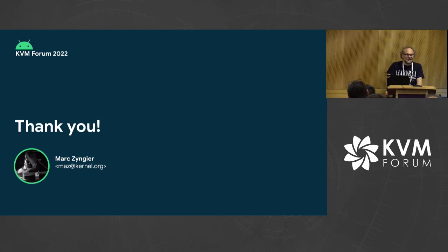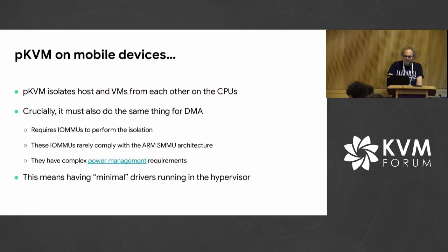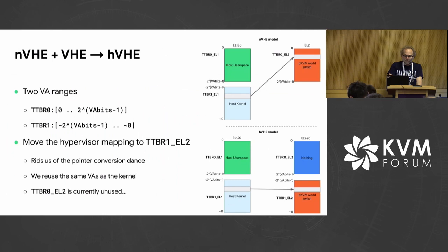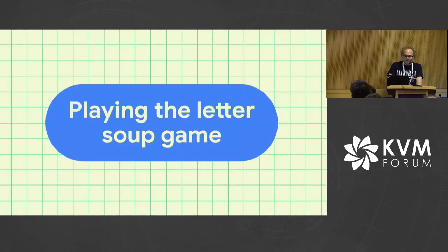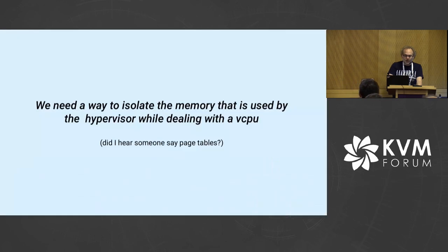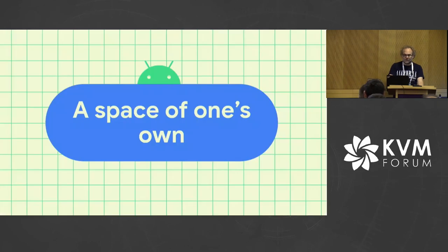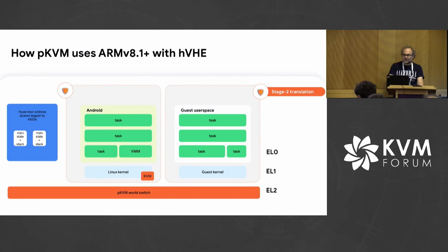Clarification question: you had a page table for your vCPU to map data, and for your module you would be jumping into EL0, but you wouldn't have access to the privileged part of the hypervisor. Right — the vCPU page table is about accessing data and it's only being accessed from EL2. The module runs at EL0 in a separate address space and competes for the same TTBR0, so they are mutually exclusive by design.